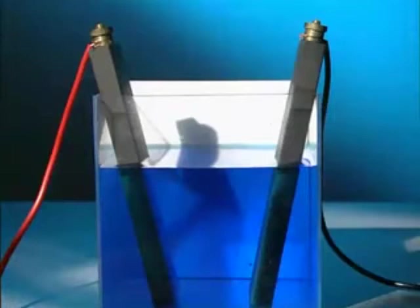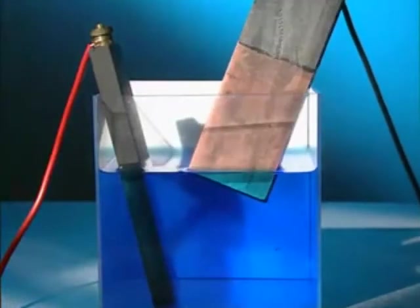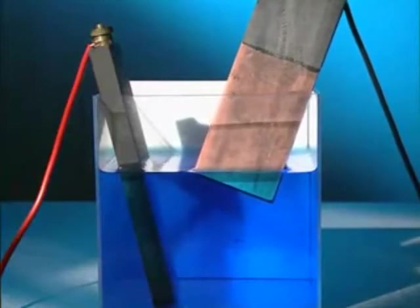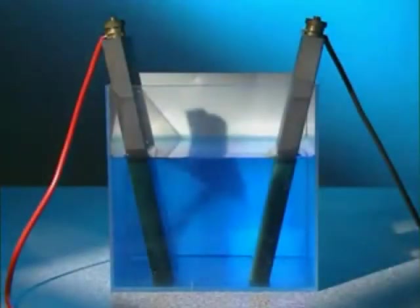Copper ions in the solution are attracted to the negative electrode. They react to form copper atoms and plate the surface of the carbon. It's the copper ions that give the solution its attractive blue colour. So, as they're gradually removed, what would happen to the solution?